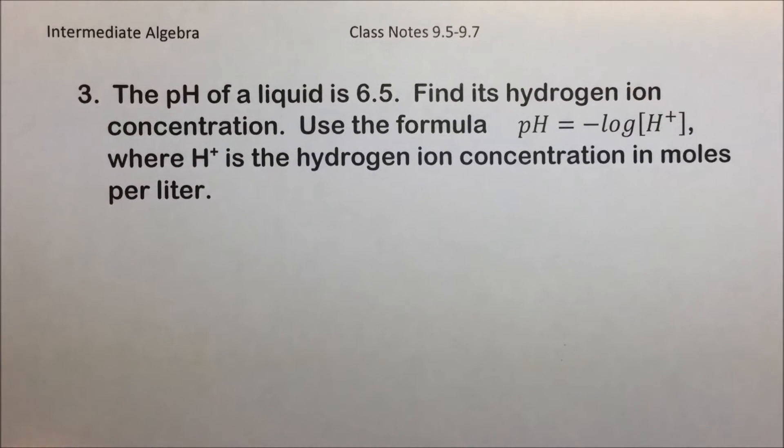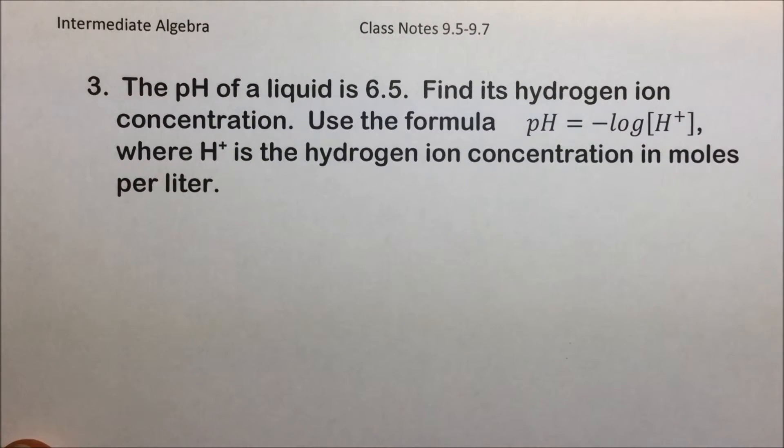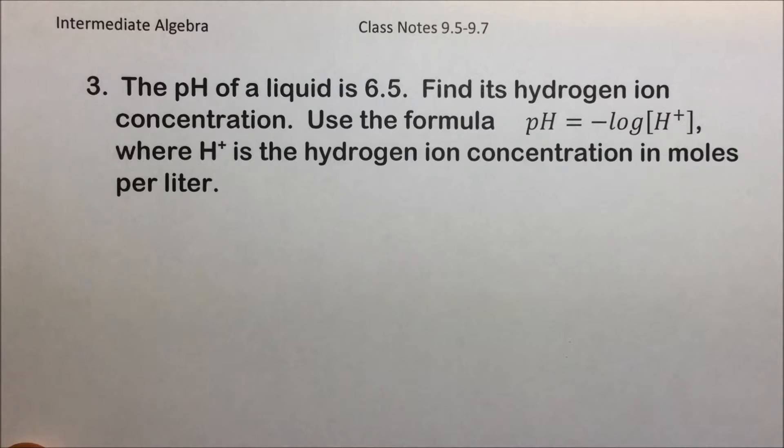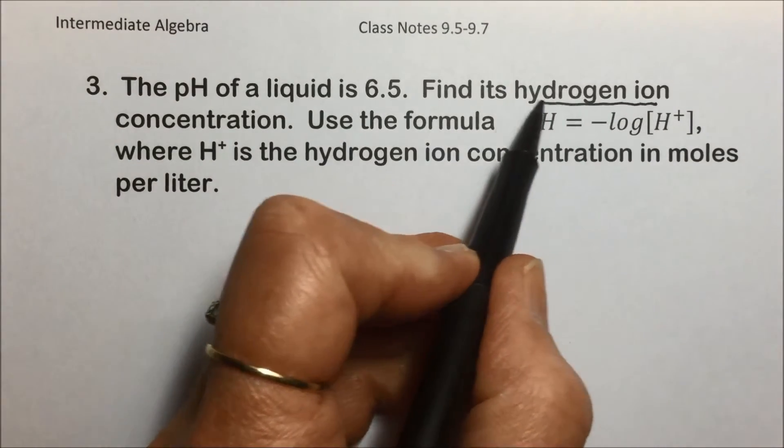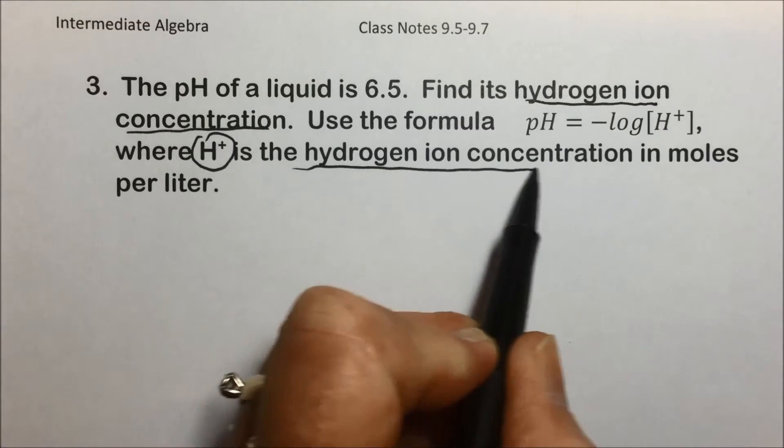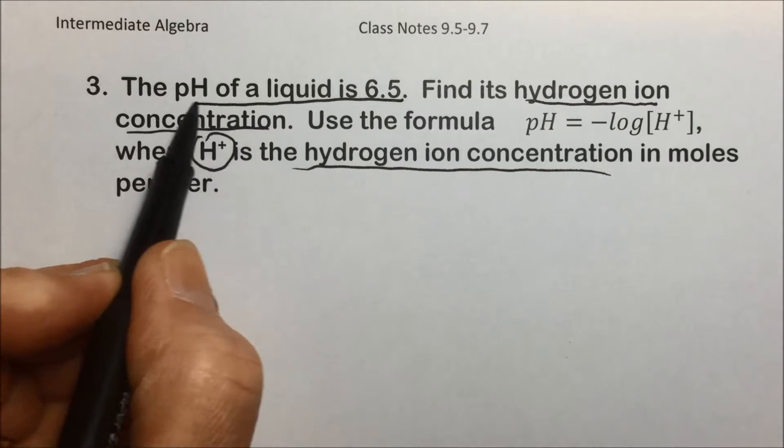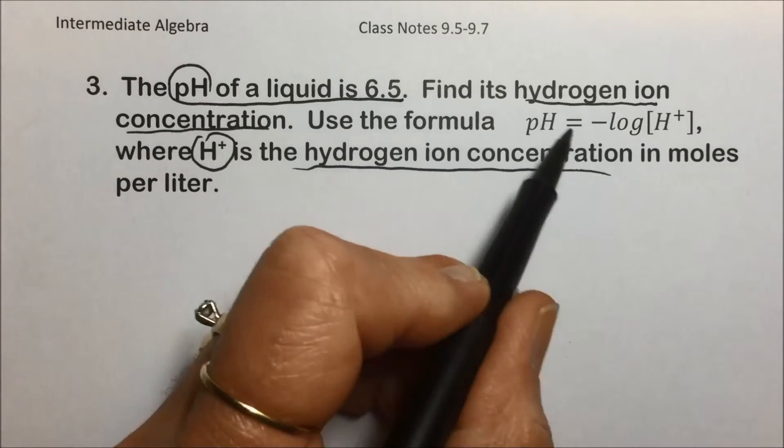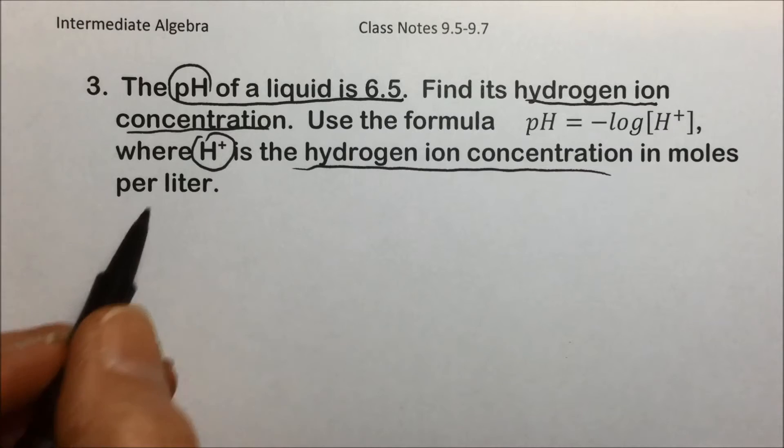Here we have an example dealing with chemistry. The pH of a liquid is 6.5. Find its hydrogen ion concentration. Use the formula pH = -log[H+], where H+ is the representation for the hydrogen ion concentration. So that's what we're looking for. They're giving us that the pH is 6.5, and that's what the formula starts with.